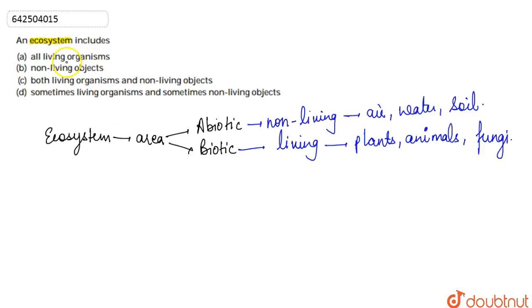If we look at the options: Option A says all living organisms - but living and non-living both components are involved, so option A is wrong. Option B is wrong. Then option C says both living organisms and non-living objects, so this is the correct one.